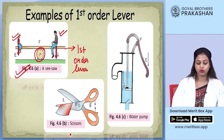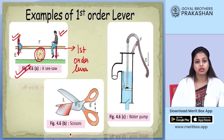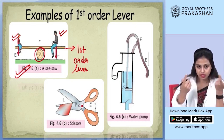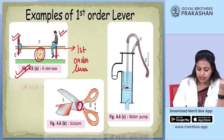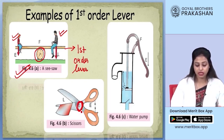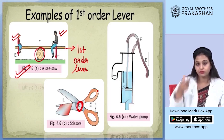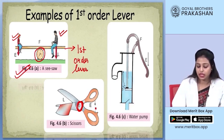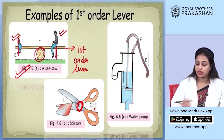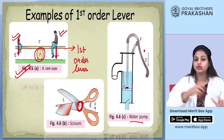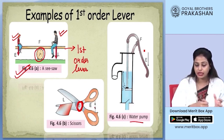Another example is a scissor. Where the two blades of the scissor are pivoted is called the fulcrum. Anything that you need to cut is the load, and the fingers you are holding the scissor with provide the effort applied. The last example is a water pump or hand pump — you apply force on the handle, which is your effort.